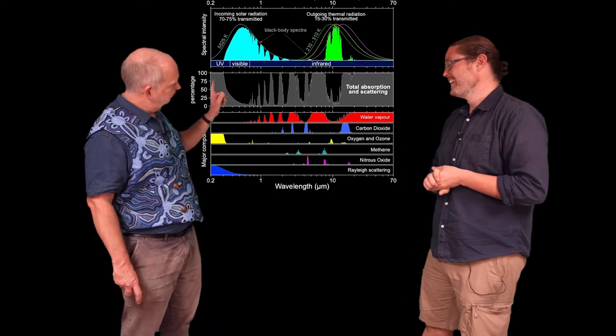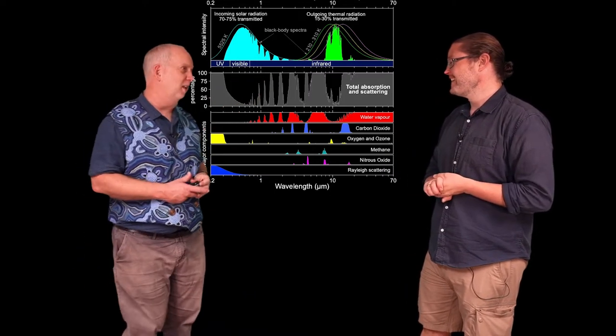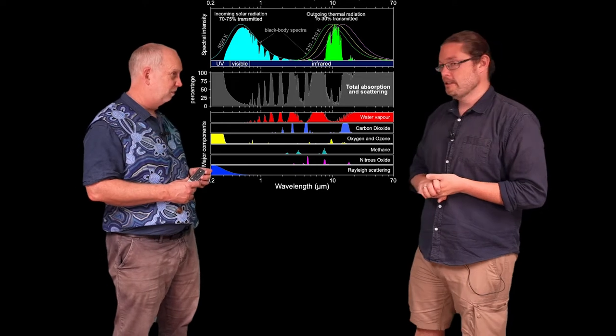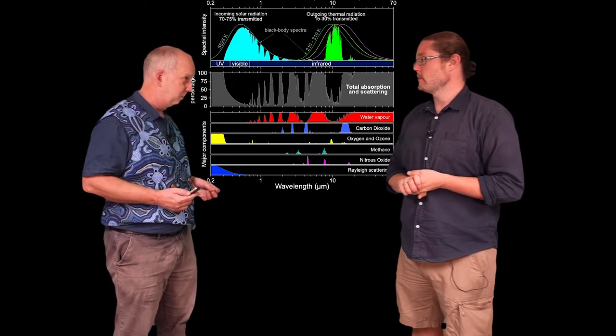So this is a spectrum and the blue is showing the light coming in from the sun and it's mostly at visible wavelengths about half a micrometer.